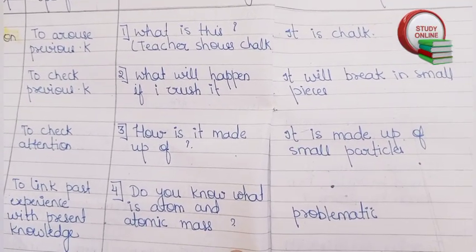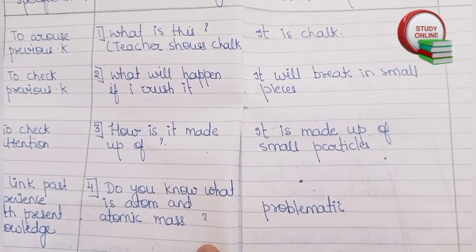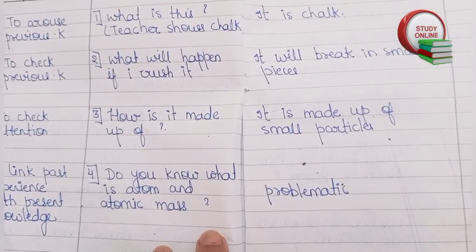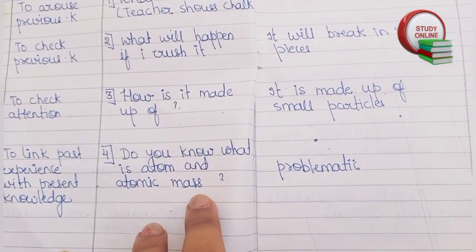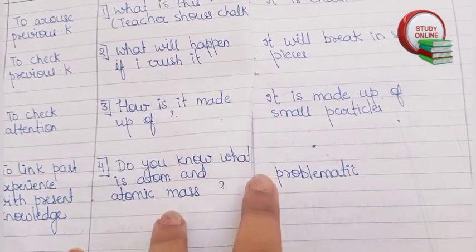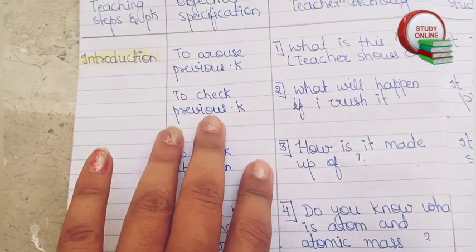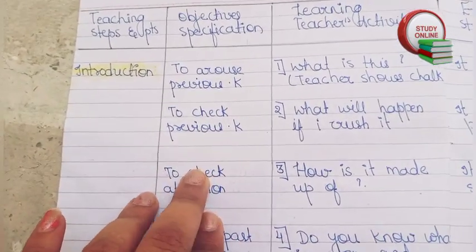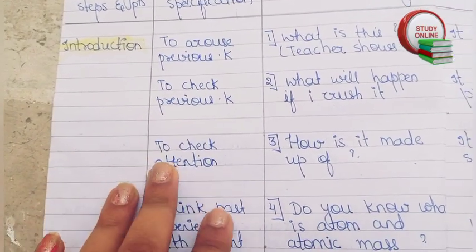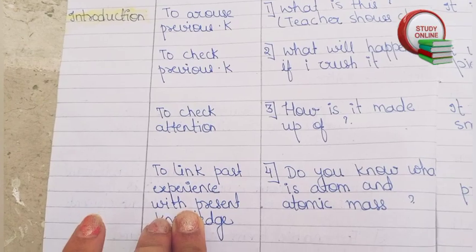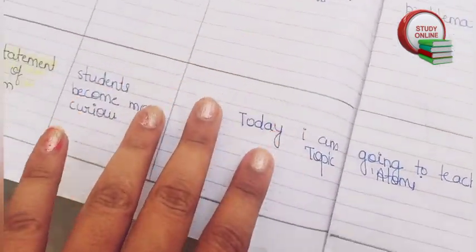The student will answer it is chalk. Then the teacher asks what will happen if I crush it — the student answers it will break into small pieces. Then the teacher asks what it is made of — small particles. When asked do you know what is an atom and atomic mass, the student cannot answer. Here you can see the objectives: to arouse and check previous knowledge, check attention, and link past experience with present knowledge.